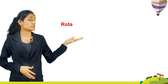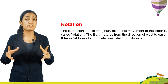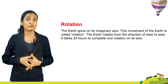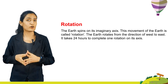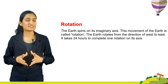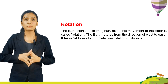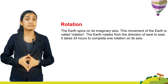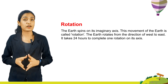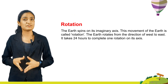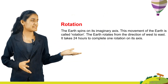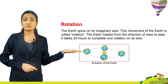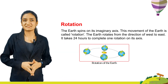Rotation. The earth spins on its imaginary axis. This movement of the earth is called rotation. The earth rotates from the direction of west to east. It takes 24 hours to complete one rotation on its axis. Here you can see the picture of rotation of the earth.